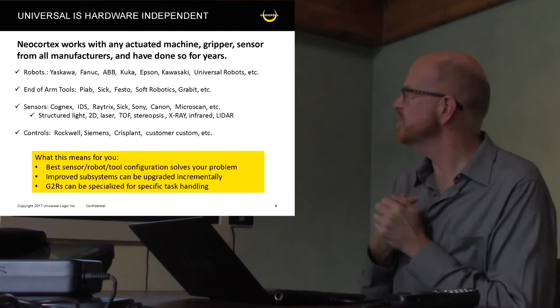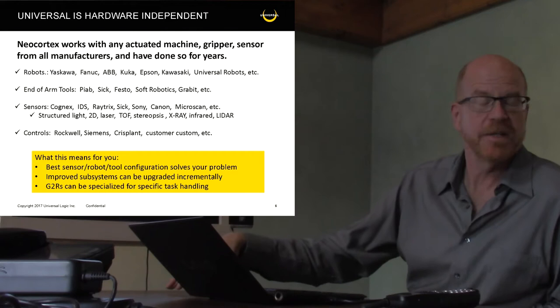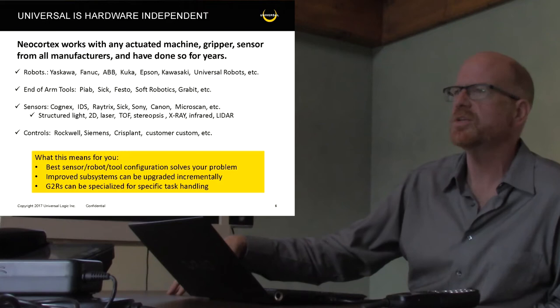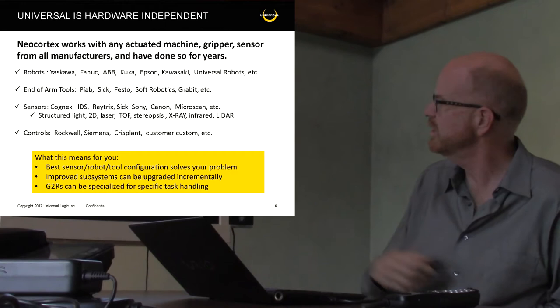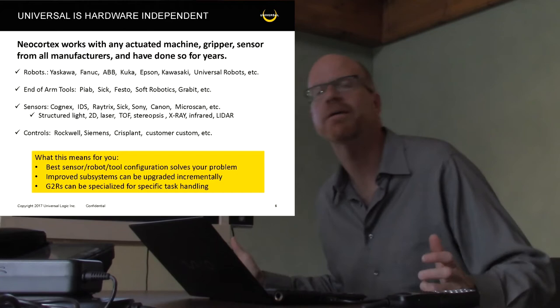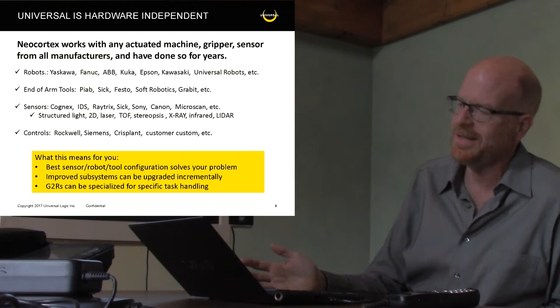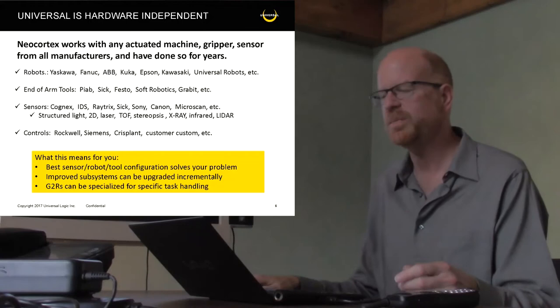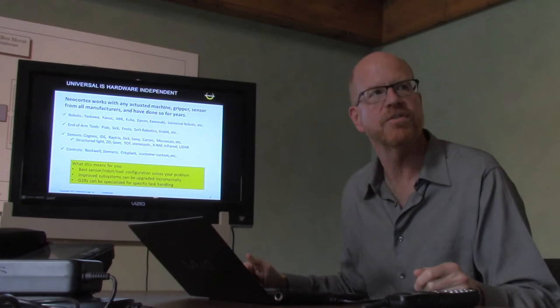I want to reinforce this point that we're hardware independent. We work at any actuated machine, gripper, sensor, from all manufacturers, and we've been doing it that way since the beginning. All major robot manufacturers, industrial or collaborative, depending on what you need. Tool manufacturers - we also do our own tool design when that's practical. Sensors: structured light, 2D, laser, time-of-flight, stereopsis, x-ray, infrared, lidar - I don't care. And then controls: Rockwell and Siemens are the two majors. Crisplant is used in some facilities. We've also encountered customers where their IT departments have created their own system, and we can tie into that too. Really it comes down to what are the basic methodologies for message passing.